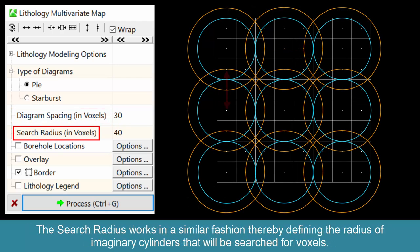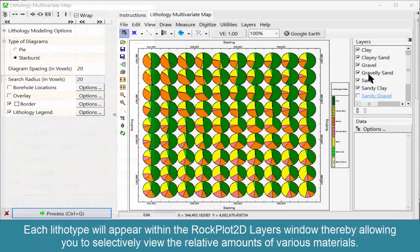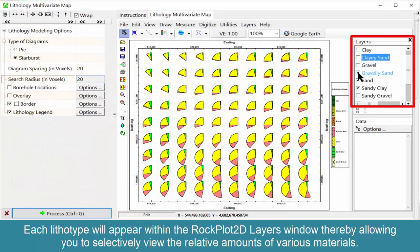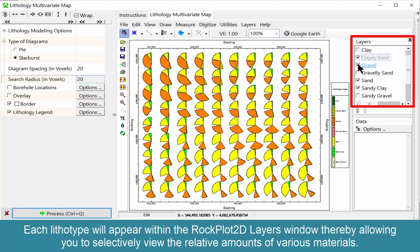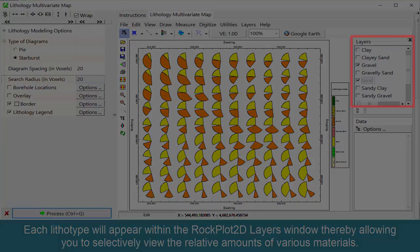The search radius works in a similar fashion, thereby defining the radius of imaginary cylinders that will be searched for voxels. Each lithotype will appear within the RockPlot 2D Layers window, thereby allowing you to selectively view the relative amounts of various materials.